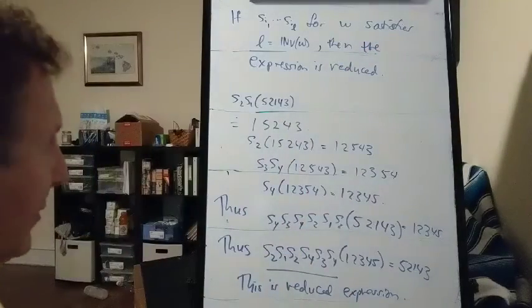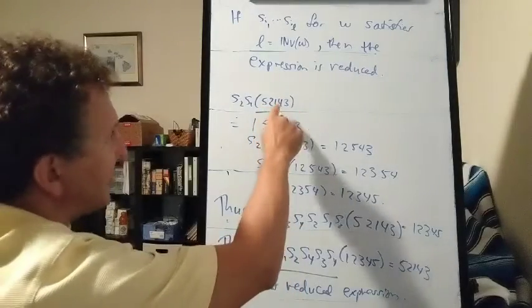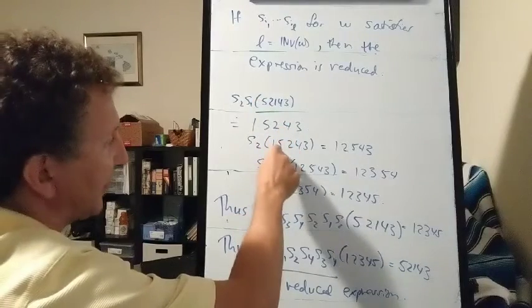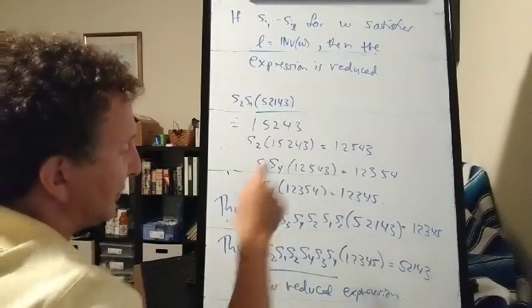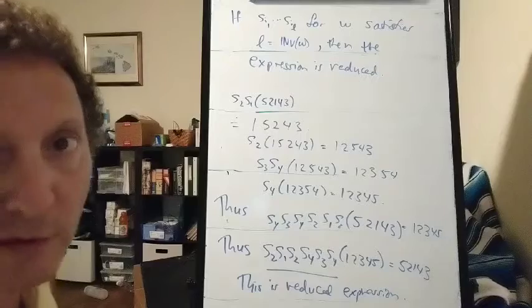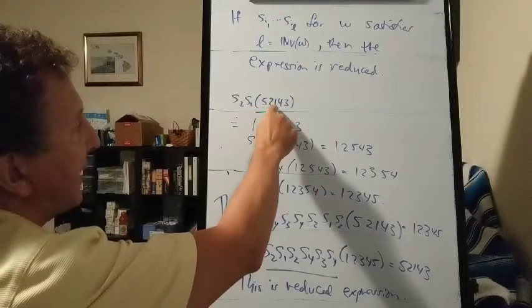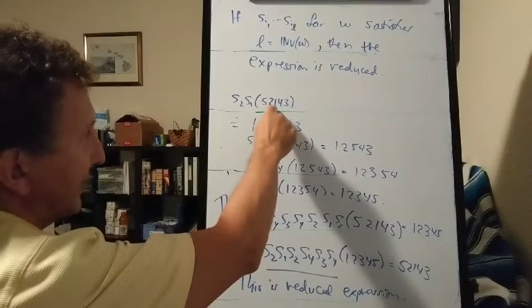Now what did we do in the algorithm? The strategy was to take the smallest letter and move it to the front, then the second smallest letter and move it to its place, and then the next smallest letter and move it to its place. Since we're always using the smallest letter, when it passes letters, the letters are certainly going to be greater than it.